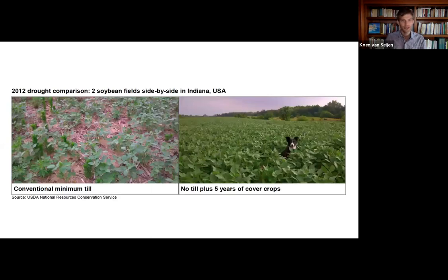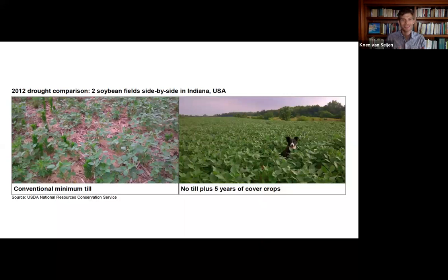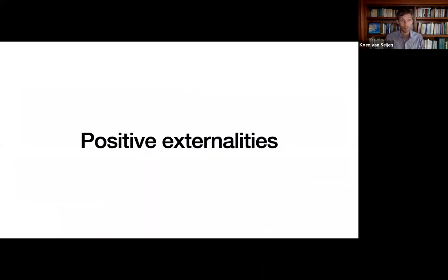Point four: climate resilience. Healthy soils cope better with droughts and floods, which are happening more and more. If you look at two side-by-side fields in Indiana — one with no-till and five years of cover crops, the other with conventional minimum-till — you can just see the difference when a drought hits. The farmer is trying to capture as much sunlight as possible and turn it into sugars. More leaf surface means more sunlight captured, and you can see which field wins.